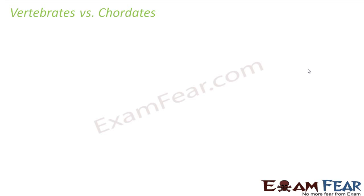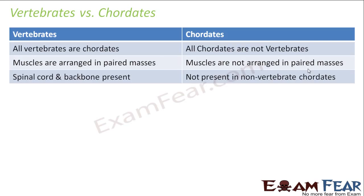Now a very important topic: vertebrates versus chordates. Many people use the term vertebrates as a synonym for chordates. You may have studied in junior classes without much distinction between chordates and vertebrates, assuming that vertebral column and notochord are the same thing — but they are not. Notochord is a different structure; the vertebral column is a different structure altogether. In some chordates, the notochord vanishes in the adult phase and a vertebral column is formed — those are known as vertebrates.